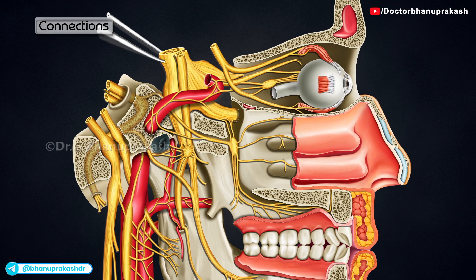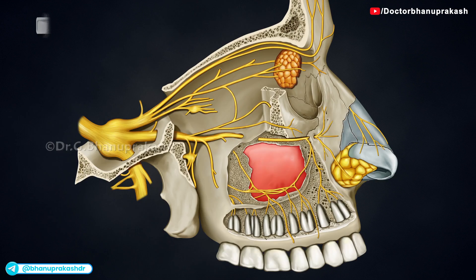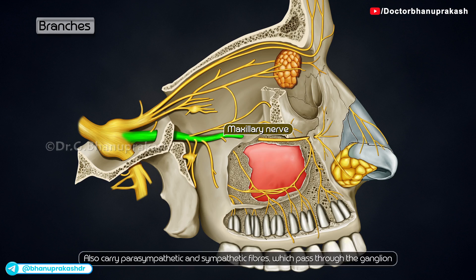The sensory roots come from the maxillary nerve. Its fibers pass through the ganglion without relay and emerge in the branches as described below. The branches of the ganglion are actually branches of the maxillary nerve. They also carry parasympathetic and sympathetic fibers which pass through the ganglion.